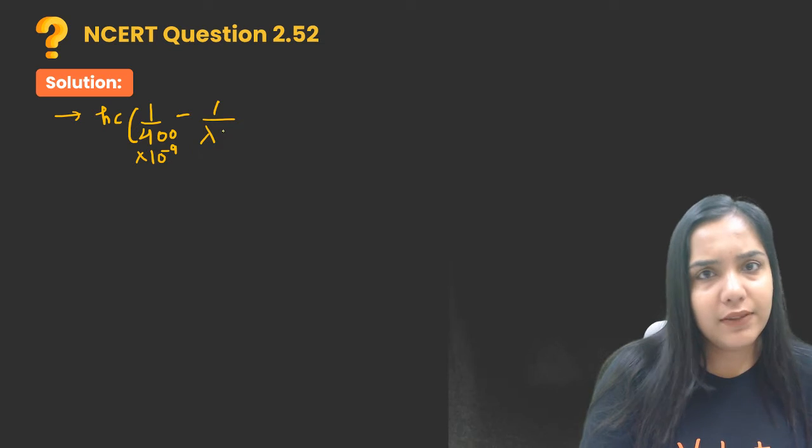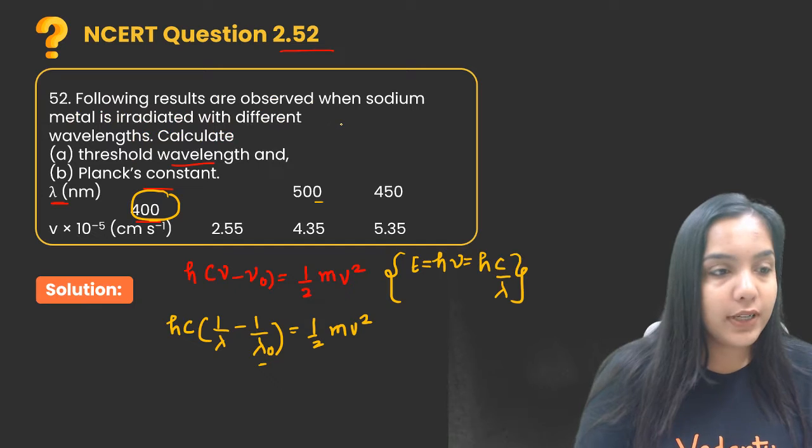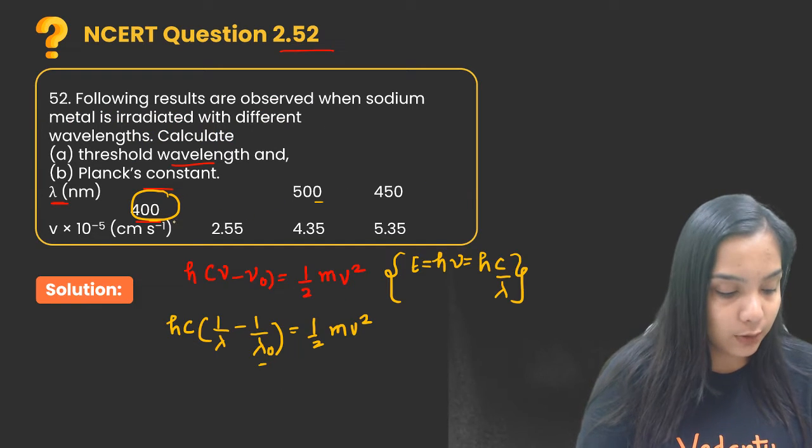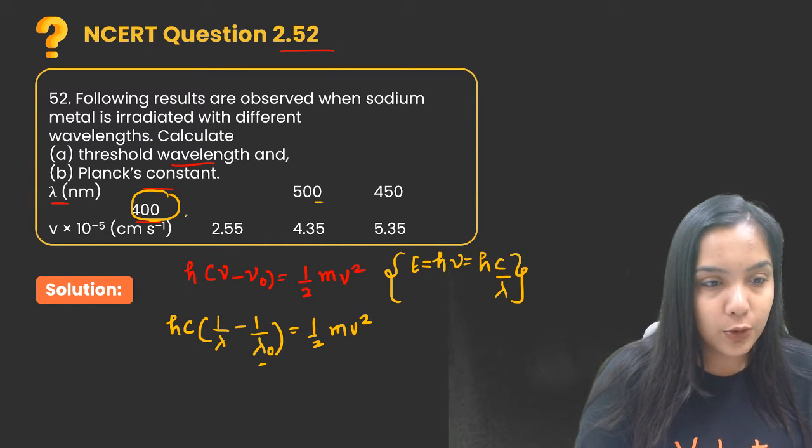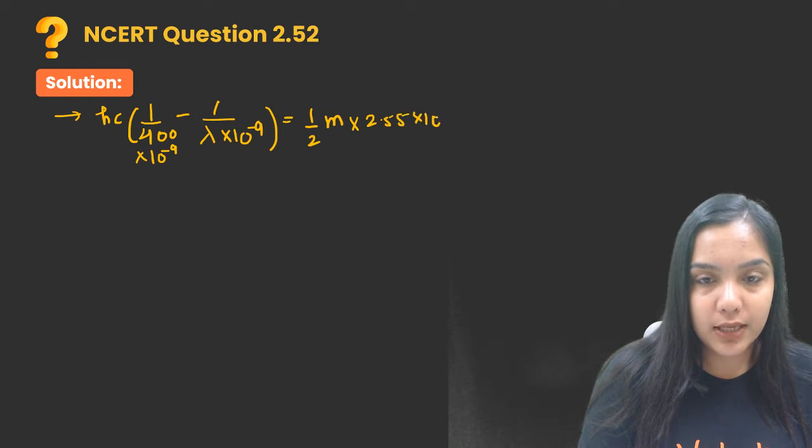Half m, now what is v value? If it is 400, it is given as 2.55 into 10 raised to power minus 5. Similarly I will write down for the second expression.